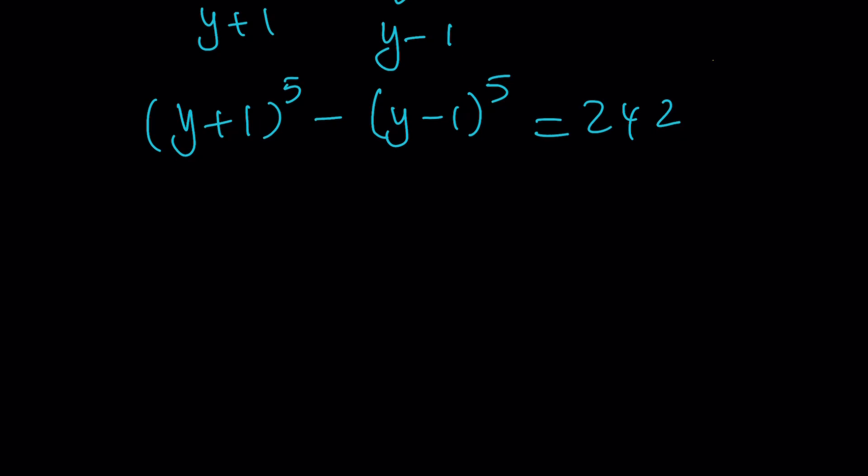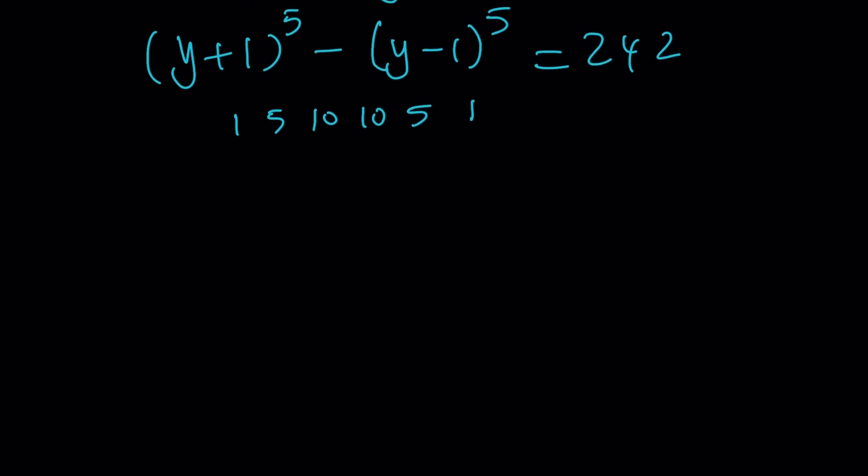So, if you have expanded the first one, the second one is alternating, so that would be pretty easy. But think about, I think it was 1, 5, 10, 10, 5, 1, right? That's the fifth row of Pascal's triangle. And then you're going to get y^5 + 5y^4. By the way, the second term is b. b is 1, so you don't have to worry about it. Plus 10y^3 + 10y^2. Notice the symmetry, 5y and 1.